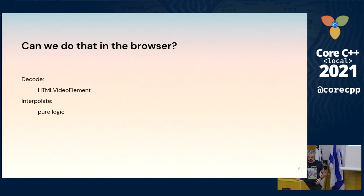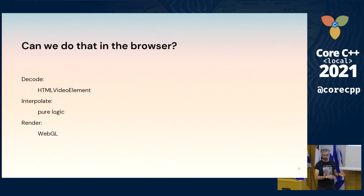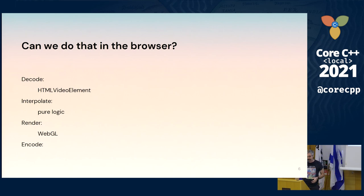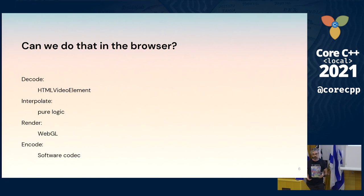Can we interpolate values? Yes, that's just pure mathematics — if we can run code, we can do that. Can we render visual effects? Yes, there's WebGL, the Web Graphics Library, which gives us practically all the abilities of desktop or mobile graphics libraries. Can we encode the result to a video file? Encoding, just like decoding, is very quick when hardware-assisted, but that's not something the browser is eager to give users. So we can't do it fast natively, but we can use a software codec — import the relevant libraries and encode everything in the browser.